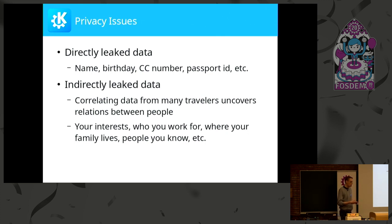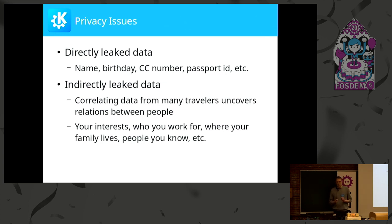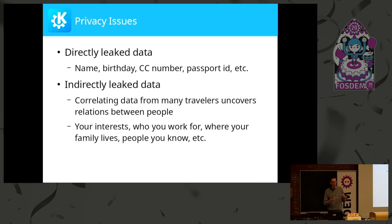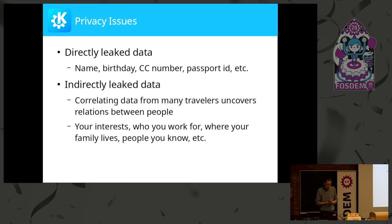But the thing people think less about is the indirectly leaked data. So if you and I travel to Brussels on the first weekend in February, that might be pure coincidence. But two or three times, same destination, same time — that is no longer a coincidence. If you have enough of that travel data, it tells you a lot about relations between people: what you are interested in, who you work for, where your family lives. So giving your travel data to someone like Google is not just impacting yourself, but everyone else as well. Not ideal.